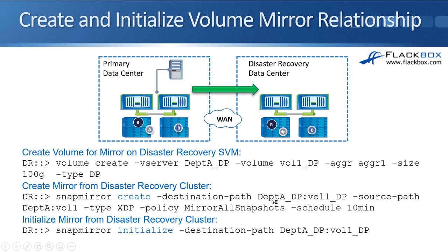To do that initial baseline transfer, the command is SnapMirror initialize and we specify the destination path — the destination SVM and the destination volume. We don't need to specify the source path here because we can only replicate one volume into a destination volume since we've already configured that relationship. The ONTAP cluster already knows, for this destination path, the only source is this one here, and it will do that initial baseline transfer and copy all of the data across.